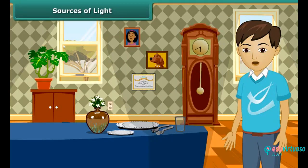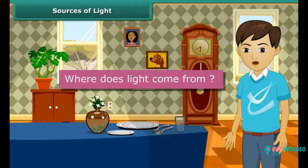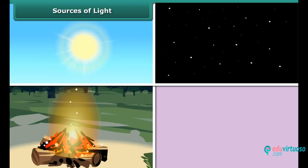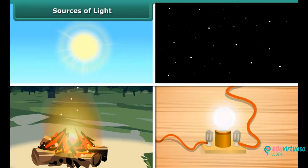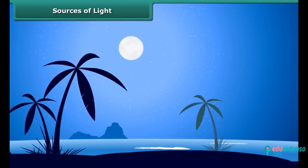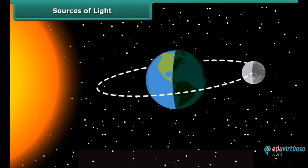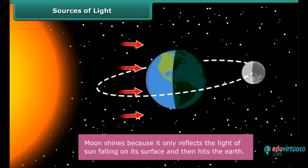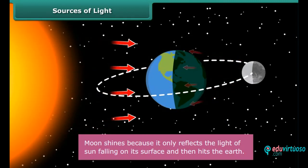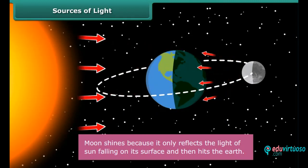Sources of light — can you tell where does light come from? Light comes from many sources like the sun, stars, fire, candle, an electric light bulb, etc. But wait! Not all things that shine are light sources. The moon is not a natural source of light. It does not have its own light. It only reflects the light of the sun falling on its surface, which then hits the earth, due to which it appears shiny when seen from earth.